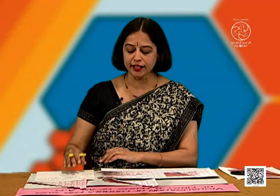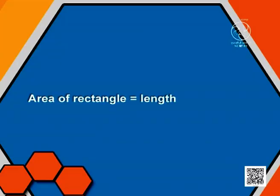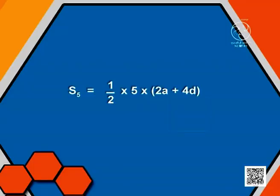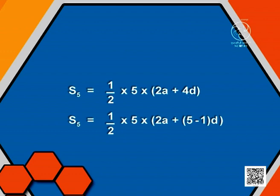What is the area of a rectangle? Area of a rectangle is equal to length into breadth. The length of this rectangle is 2A plus 4D units and the breadth is 5 units. So the area is 2A plus 4D into 5 square units. S5 will be half of this area, which gives us half into 5 into 2A plus 4D, equal to half into 5 into 2A plus 5 minus 1 into D, replacing 4 by 5 minus 1.